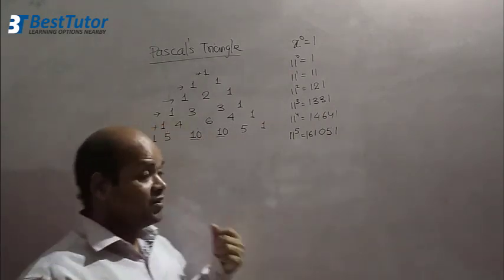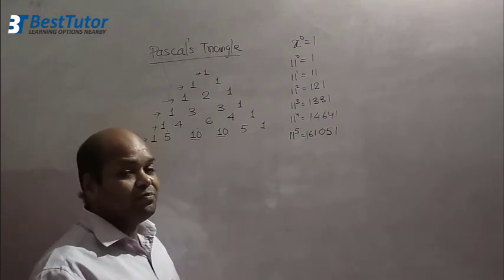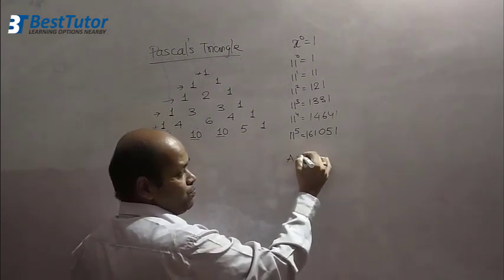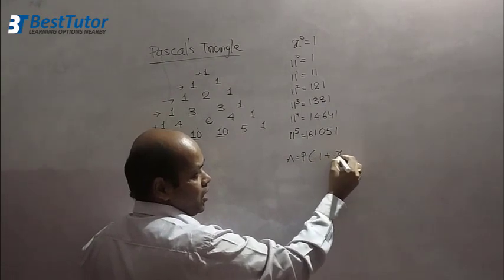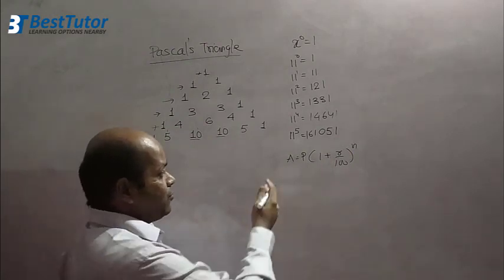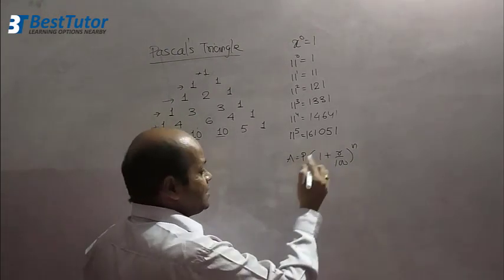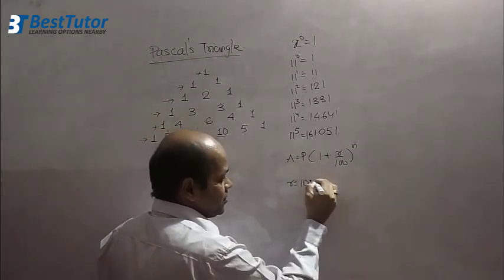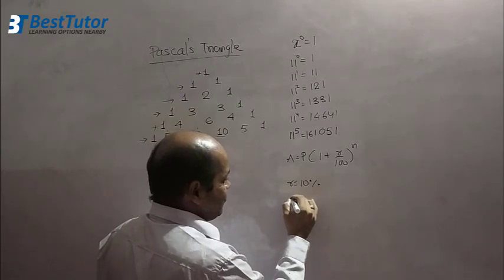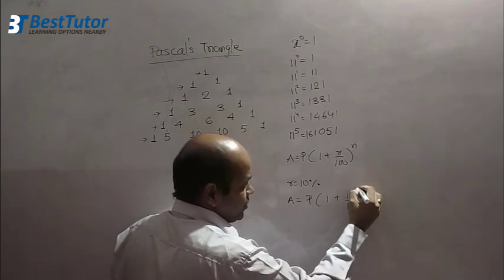So here, Pascal's Triangle is giving us the powers of 11. What are the applications of this? Here it is. You would have studied, or you would study in the future, simple and compound interest. What is the compound interest formula? A equals P into 1 plus R by 100 raised to N.